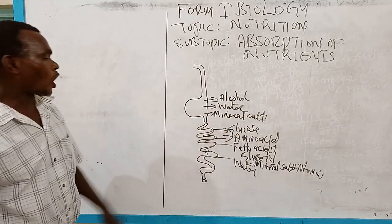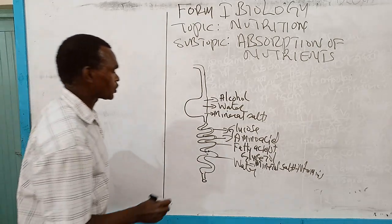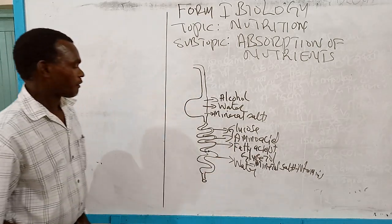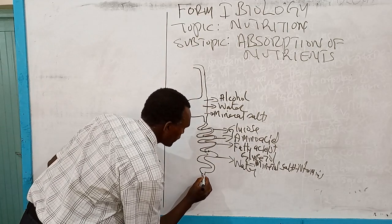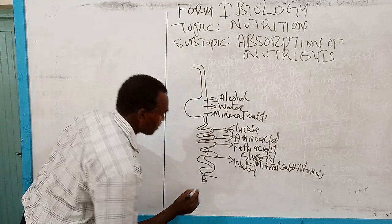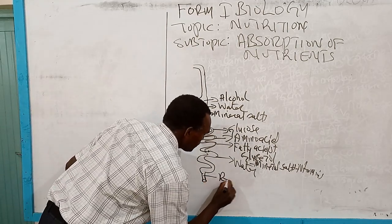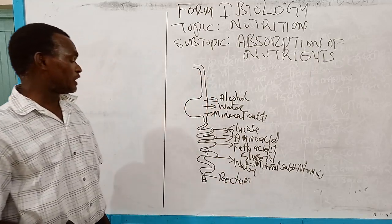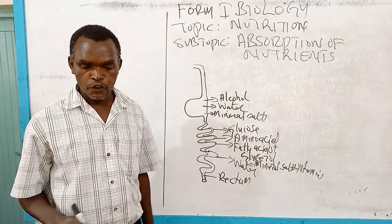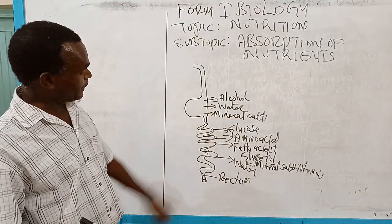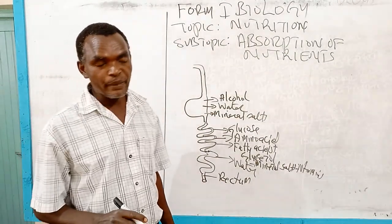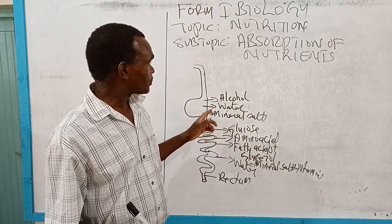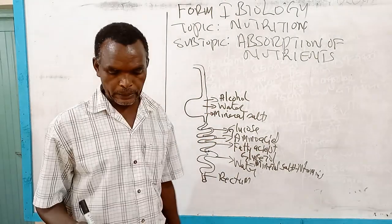The large intestine is mainly for the absorption of water. Then afterwards we have the rectum, where undigested food awaits egestion. Those are the places in the alimentary canal where the absorption of food takes place.